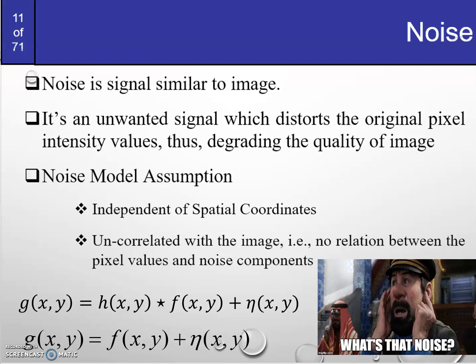For better visualization, we'll remove H(x,y) — treating it as an identity operator — and just study how noise affects the image on its own. So we have g(x,y), the degraded image, equal to f(x,y), the original image, plus n(x,y). We're just going to take into consideration the noise factor. But the question is: what is noise, basically?